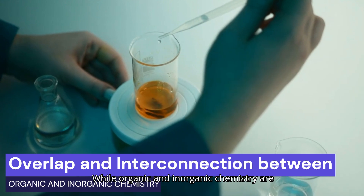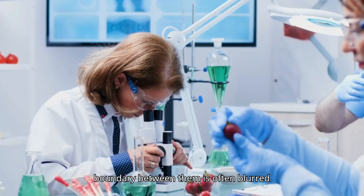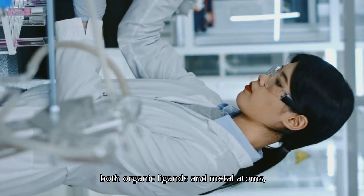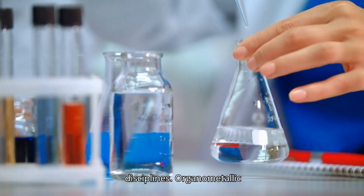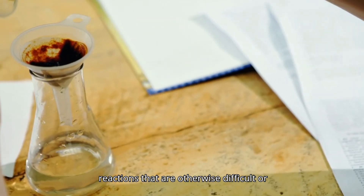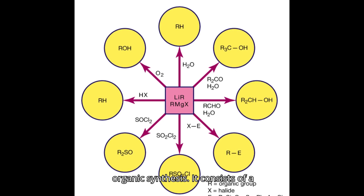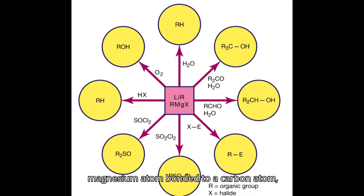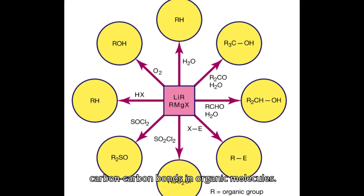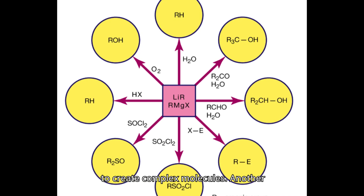While organic and inorganic chemistry are distinct fields, they are by no means isolated from each other. In fact, the boundary between them is often blurred. Organometallic chemistry, which involves compounds that contain both organic ligands and metal atoms, sits at the intersection of these two disciplines. Organometallic compounds play crucial roles in catalysis, facilitating chemical reactions that are otherwise difficult or slow. Consider the Grignard reagent, an organometallic compound used in organic synthesis. It consists of a magnesium atom bonded to a carbon atom and is highly reactive, making it a valuable tool for forming new carbon-carbon bonds in organic molecules.